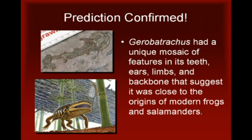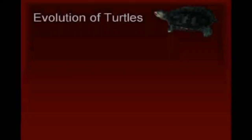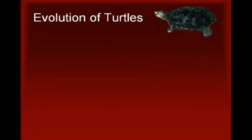Gerobatrachus is an intermediate form that fits neatly into the gap between frogs and salamanders. This intermediate form exhibits a unique mosaic of features in its teeth, ears, limbs, and backbone that all suggest it was close to the origin of modern frogs and salamanders.